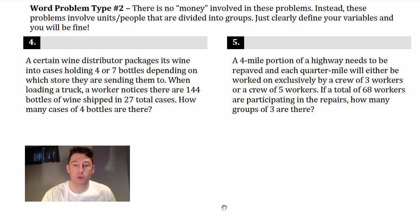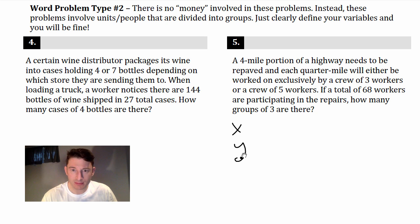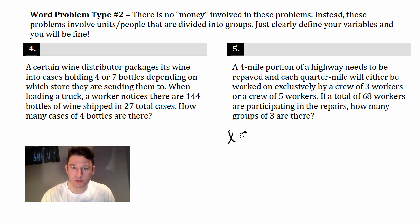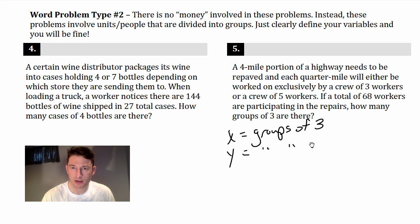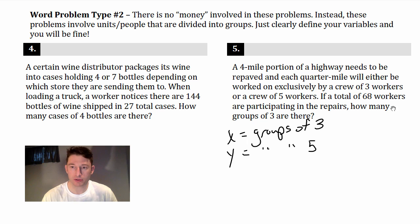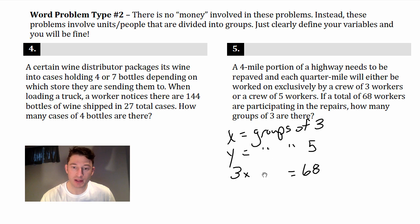This is similar to the wine question — instead of packages of wine, we've got groups of people. Let X equal crews of three and Y equal crews of five. There's a total of 68 workers, so the equation is 3X plus 5Y equals 68.